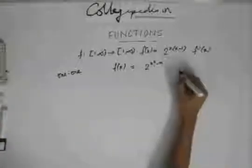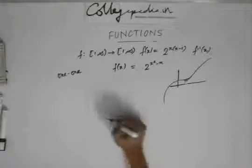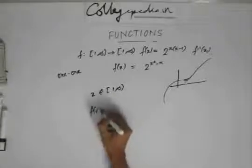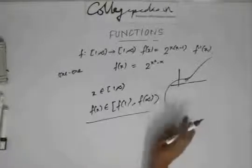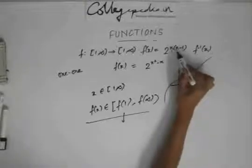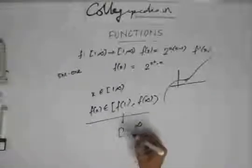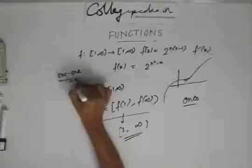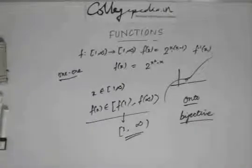Now since it's a strictly increasing function, the graph will be an increasing graph. So you can say that if x lies between 1 to infinity, since it's strictly increasing, f(x) lies between f(1) and f(infinity). And what is f(1)? You put 1 in and you get 1. f(infinity) is infinity. So this is the range of the function. You can see that the range equals the co-domain, so it's an onto function. The function is both one-to-one and onto, so it's a bijective function.